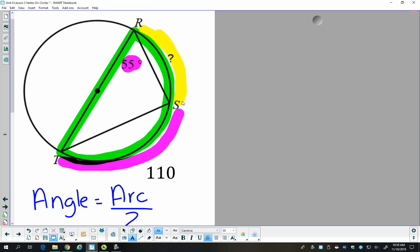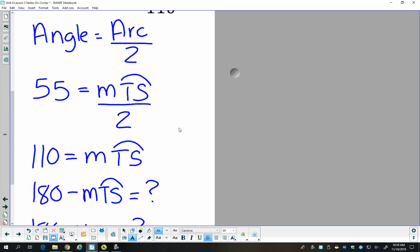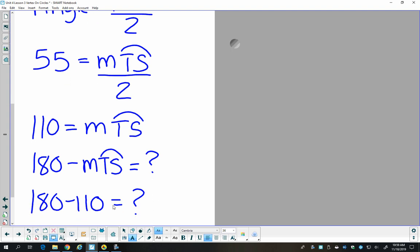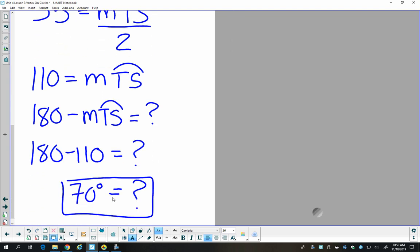So if I subtract 110 from 180, it'll give me my yellow arc. So I'll do 180 minus arc TS. And I get that piece I'm looking for is 70 degrees.